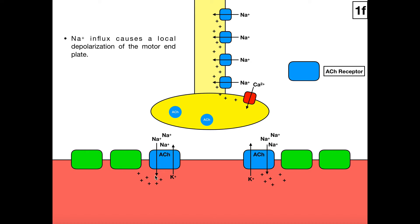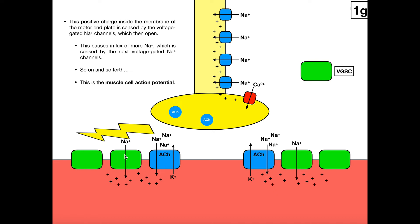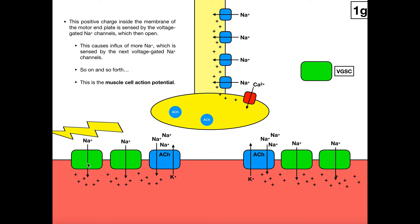As these positive charges accumulate, we see some nearby voltage-gated sodium channels. These voltage-gated sodium channels are sensitive to the positive charge that built up due to the chemically-gated ion channels, so the first voltage-gated sodium channel opens. We get sodium influx leading to another buildup of positive charge, which is sensed by the next voltage-gated sodium channel. As we get the sequential unidirectional opening of these voltage-gated sodium channels, that is the action potential propagating along the muscle cell membrane — also termed the sarcolemma. This occurs in both directions. This is the muscle cell action potential.